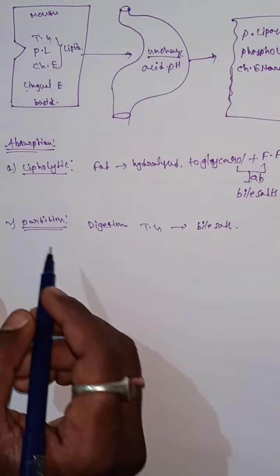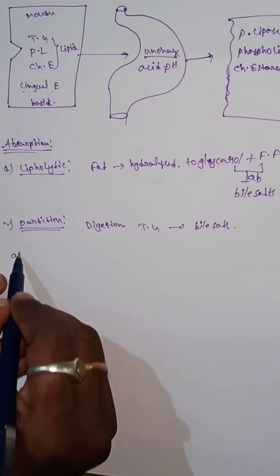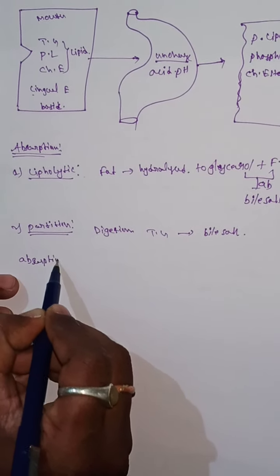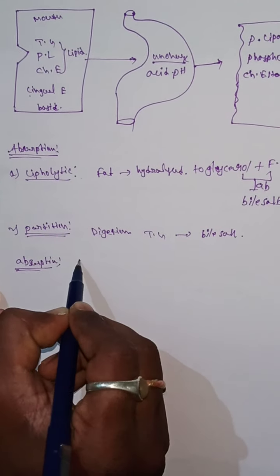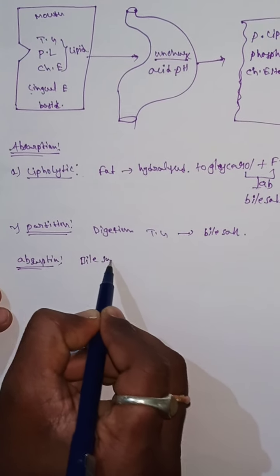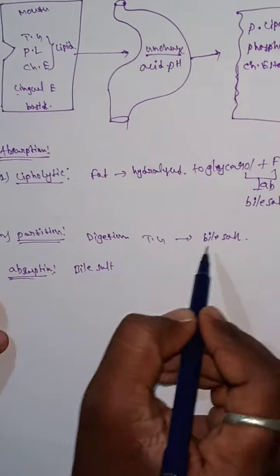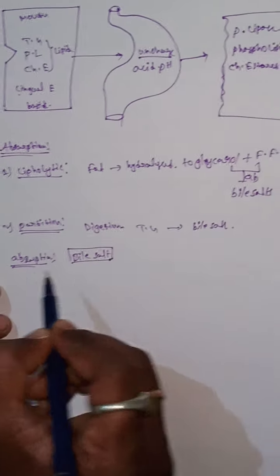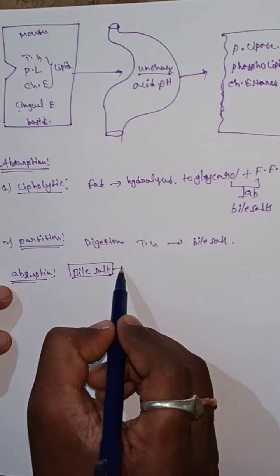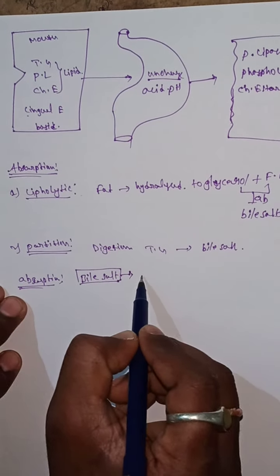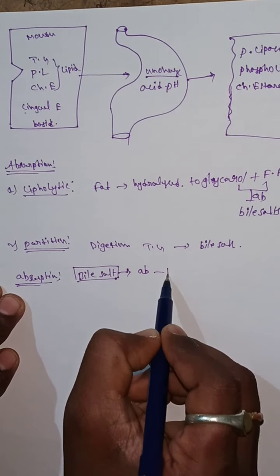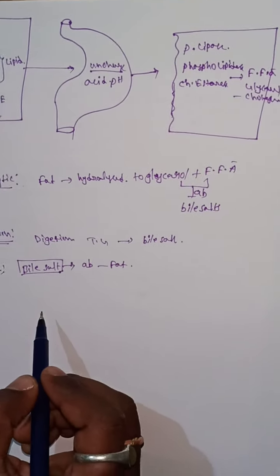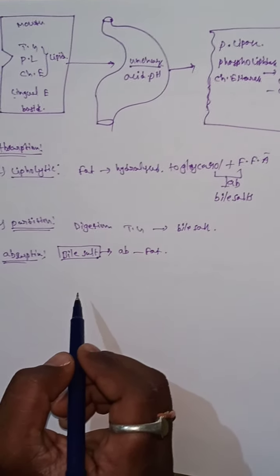In both theories, the absorption of lipids depends upon bile salts. Bile salts play a major role in the absorption of lipids, absorbing each and every fat substance from the intestine.